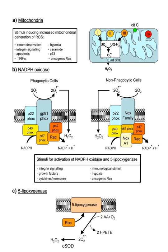ROS are produced during a variety of biochemical reactions within the cell and within organelles such as mitochondria, peroxisomes, and endoplasmic reticulum. Mitochondria convert energy for the cell into a usable form, adenosine triphosphate. The process of ATP production in the mitochondria, called oxidative phosphorylation, involves the transport of protons across the inner mitochondrial membrane.